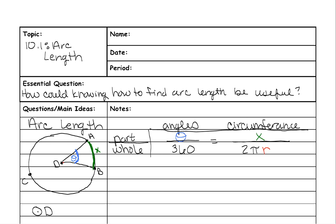And the radius is always the distance from the center to the outside. It could be that one or it could be this one. It could be either one. And that is the radius.